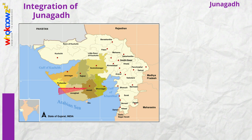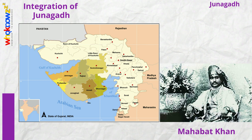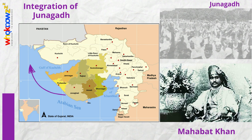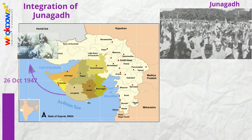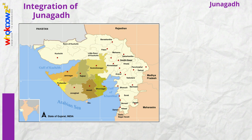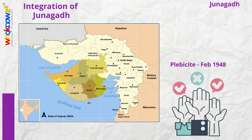Junagad is located south-west of Gujarat, and its Muslim ruler at the time, Mahabat Khan, acted against the advice of Mountbatten and opted to accede to Pakistan, stating that it had a direct link to Pakistan through the sea. India believed that if Junagad was permitted to go to Pakistan, the communal tension already simmering in Gujarat would burst, and refused to accept its accession to Pakistan by the Muslim Nawab. On 26th October, the Nawab and his family fled to Pakistan, and the government conducted a plebiscite in February 1948 which went almost unanimously in favour of accession to India.